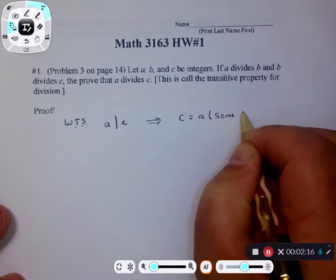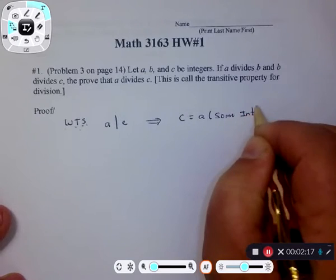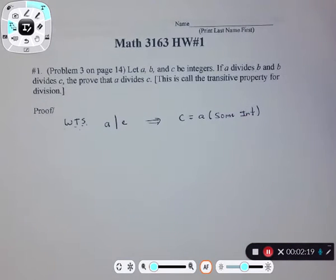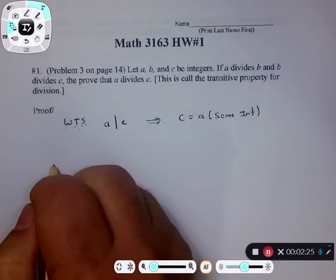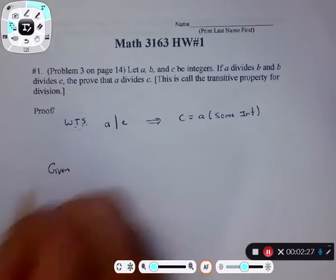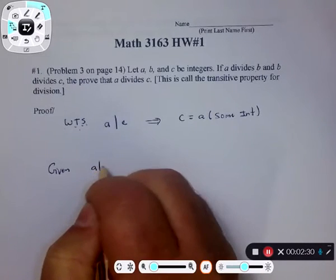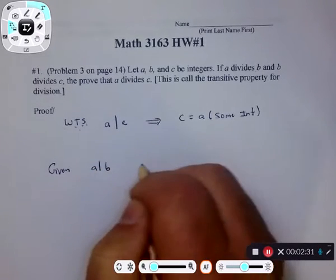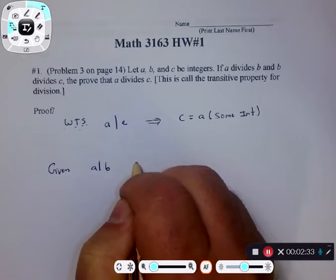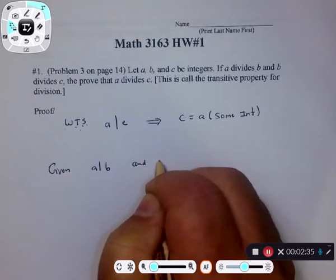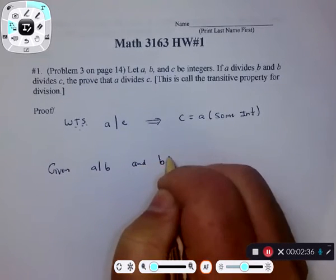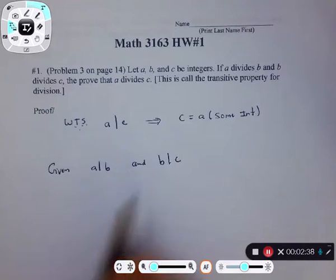That's the key — what I really want to show is an equation with c equal to a times some integer. Now let's start with the givens. You were given that a divides b and you're given that b divides c.